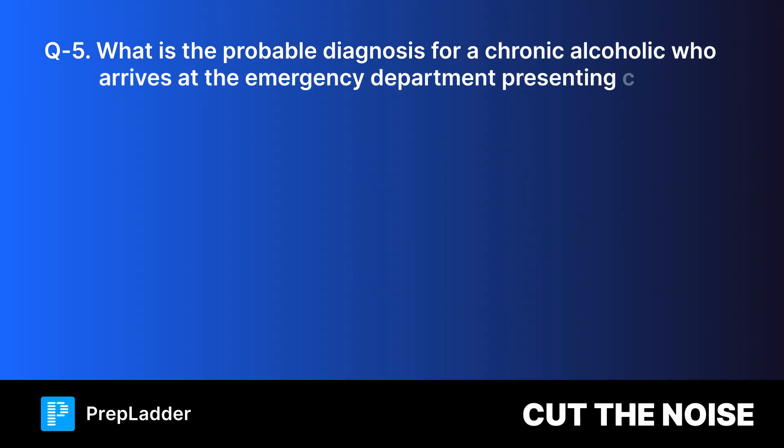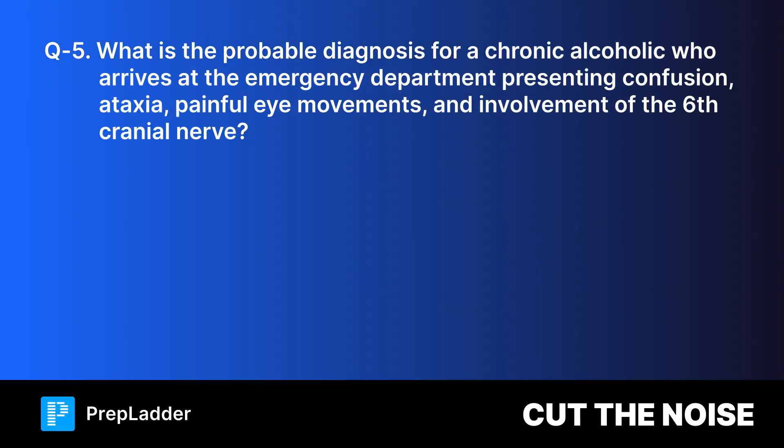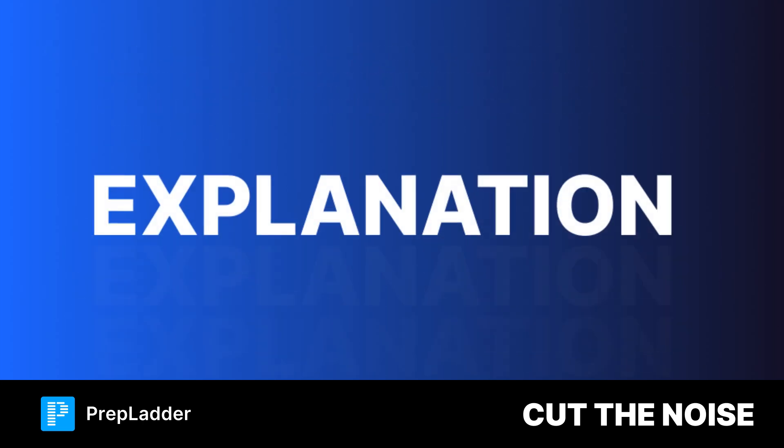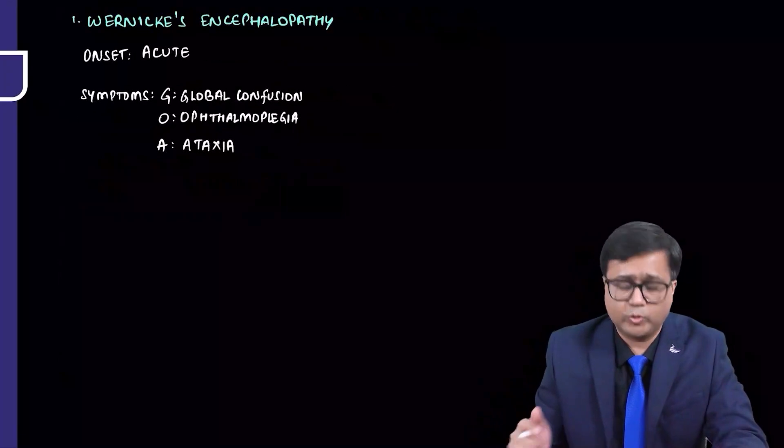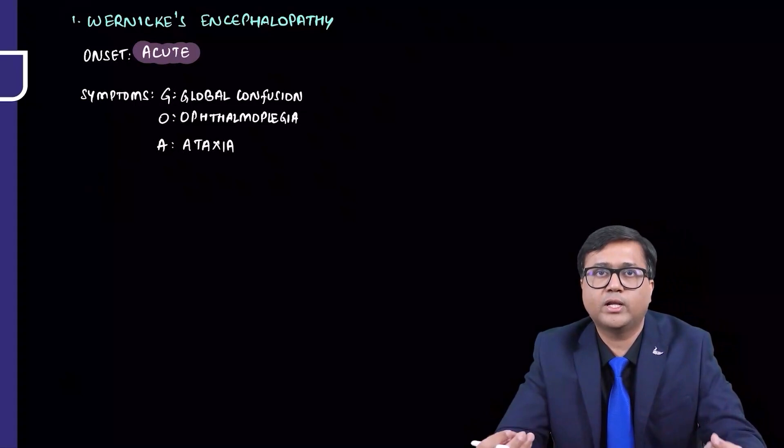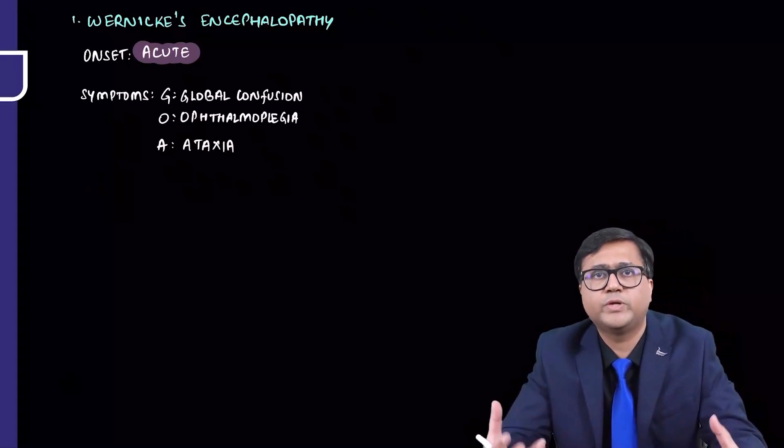Question five. What is the probable diagnosis for a chronic alcoholic who arrives at the emergency department presenting confusion, ataxia, painful eye movements, and involvement of the sixth cranial nerve? Your options are, and the correct answer is Wernicke's encephalopathy. Here's the explanation. Wernicke's encephalopathy, generally the onset is acute or sudden. The symptoms would develop within few hours or maybe within few days.